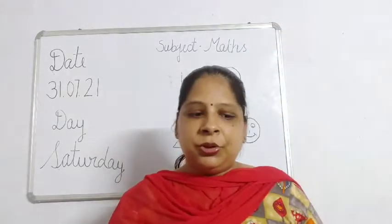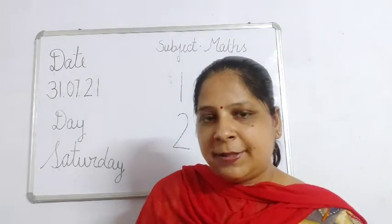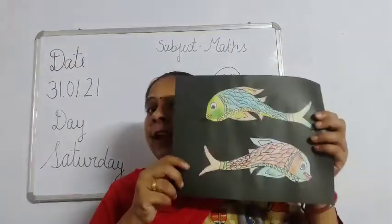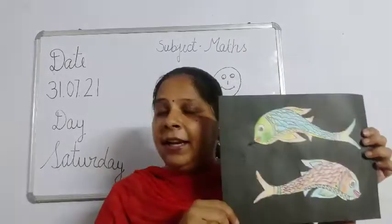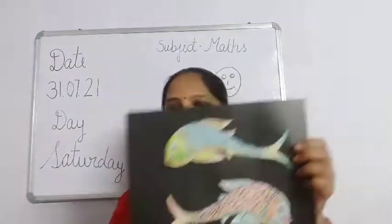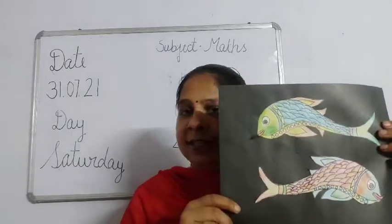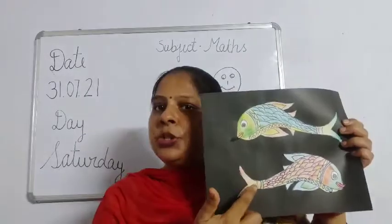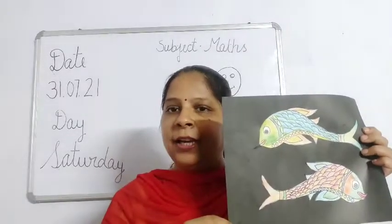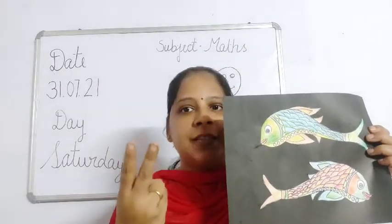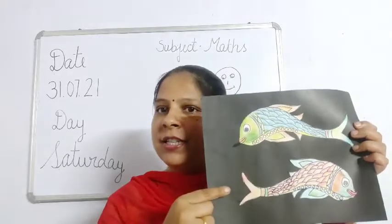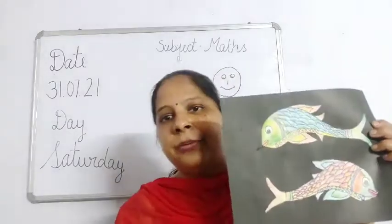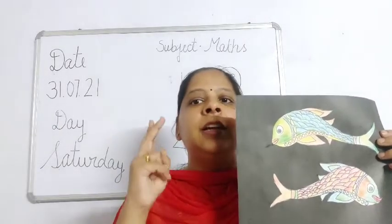After that, I will show you some more pictures. So children, you can see in this sheet there are some fishes. So let's count them. 1, 2. Here you can see 2 fishes. How many fishes? 1, 2. You have to repeat after me. 1, 2.